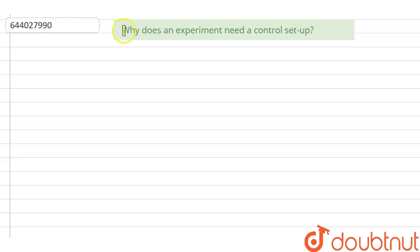The question is: why does an experiment need a control setup? So what is a control?